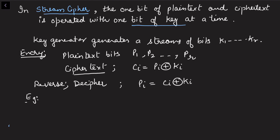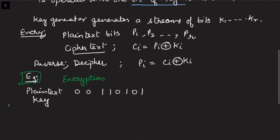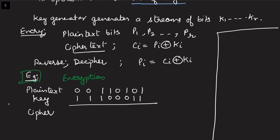Let's consider an example. For the encryption process, let me write the plain text in binary form. The key is also converted into binary digits, and then we apply the XOR operation to get the cipher text. The XOR truth table has two input bits x and y.